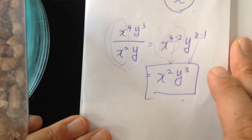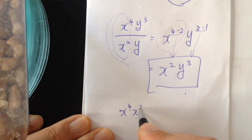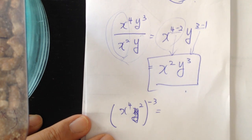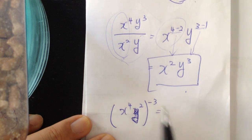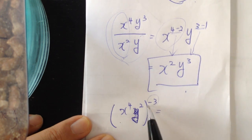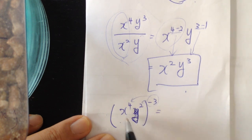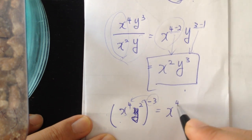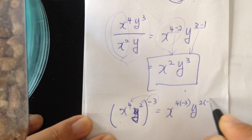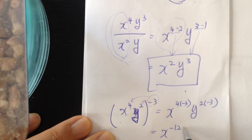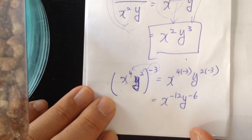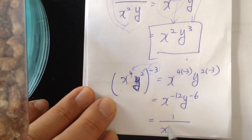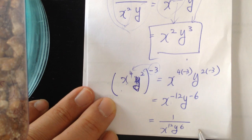One more example: when there is an exponent outside of parentheses, it applies to everything inside. So (x⁴y)^(–3) means both x and y get multiplied by –3 — giving x^(–12) and y^(–3). Since they both have negative exponents, flip them both to the denominator. That's the end result.